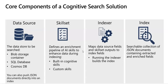While a basic search solution that indexes data extracted directly from the data source can be useful, the expectations of modern application users have driven a need for richer insight into the data. In Azure Cognitive Search, you can apply artificial intelligence skills as part of the indexing process to enrich the source data with new information, which can be mapped to index fields. The skills used by an indexer are encapsulated in a skill set that defines an enrichment pipeline in which each step enhances the data source with insights obtained by a specific AI skill.